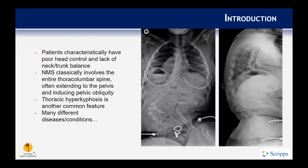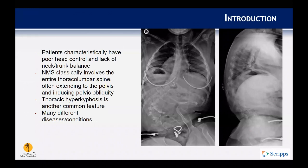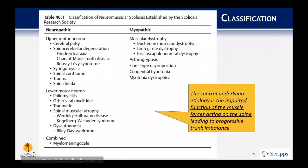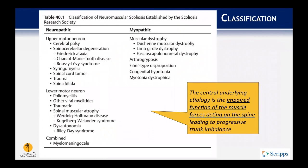Patients characteristically have poor head control and lack trunk and neck muscle balance. Neuromuscular scoliosis classically involves an entire thoracolumbar spine and often extends into the pelvis with fairly severe pelvic obliquity at times. Thoracic hyperkyphosis is also another common feature.